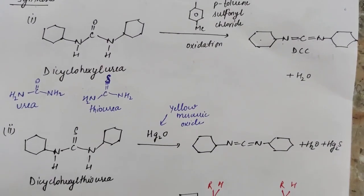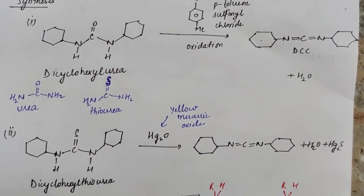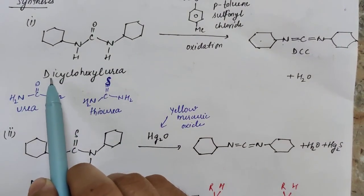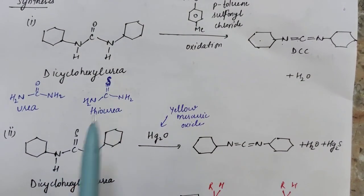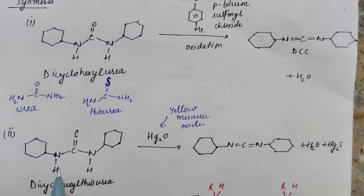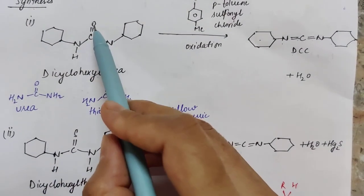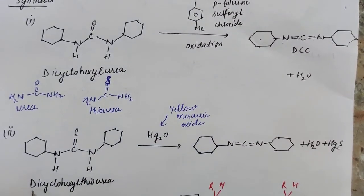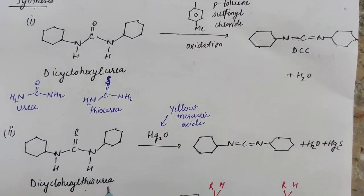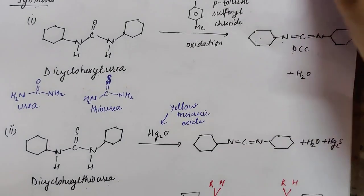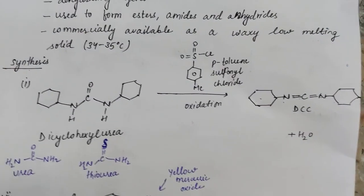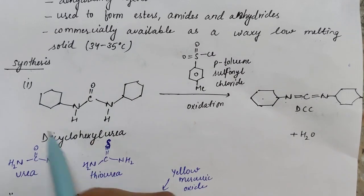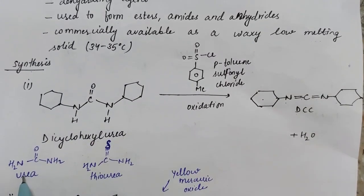DCC is synthesized by two main methods. In the first method, the starting material is dicyclohexyl urea. In the second method, the reagent is very similar but instead of an oxygen group, it has a sulfur group, making the starting material dicyclohexyl thiourea.